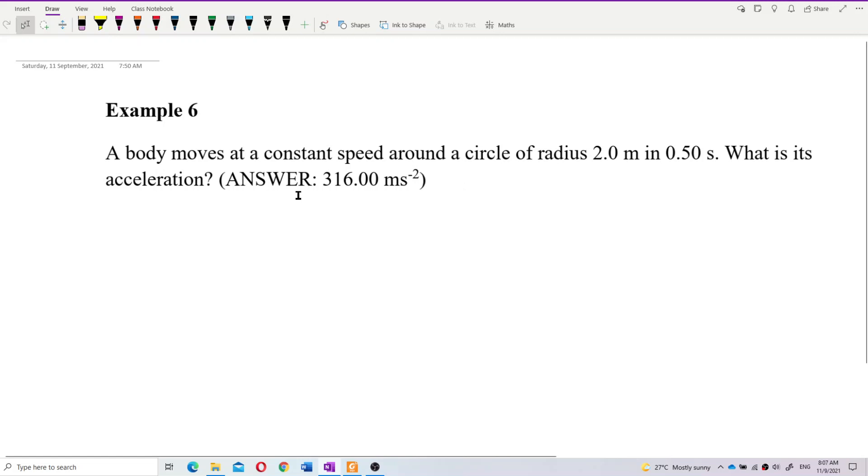So let's imagine what is this body. How is it moving? It moves at constant speed. So from here we know it is a uniform circular motion.